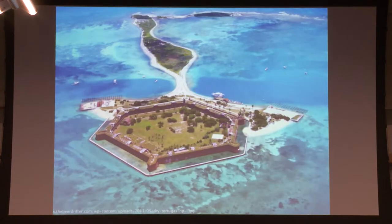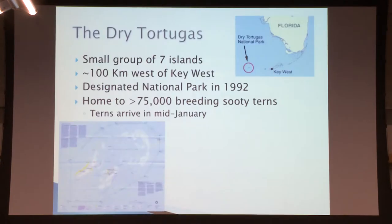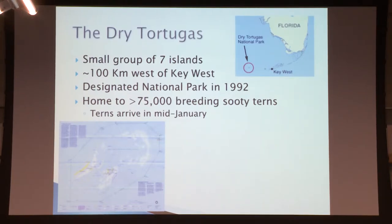My field site is the Dry Tortugas National Park. Rolling Stone magazine named it one of the top 10 coolest places you've never been to. It is about 100 kilometers west of Key West — about a two to four hour boat ride — and was designated a national park in 1992. It hosts over 75,000 breeding adults every year. The terns arrive in about mid-January to lay their eggs and then leave around mid-June.